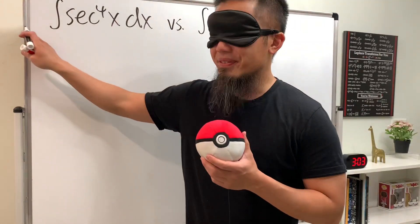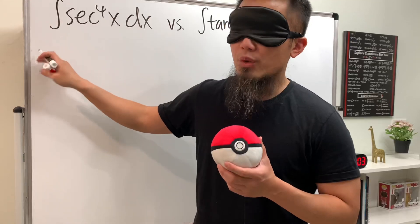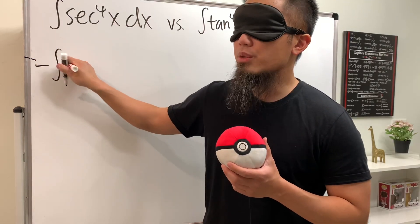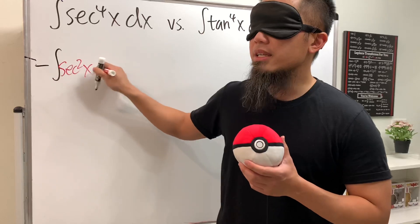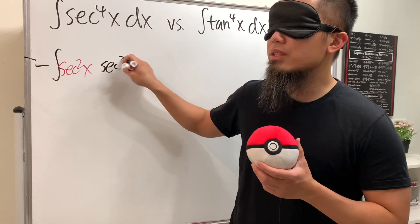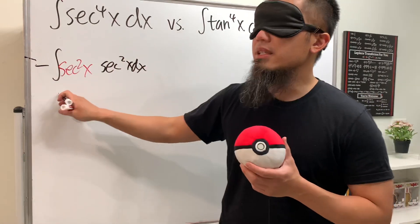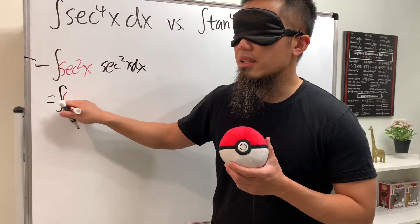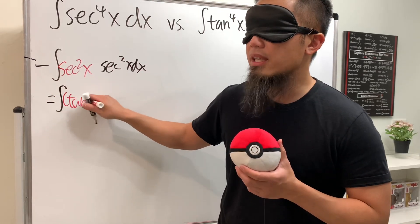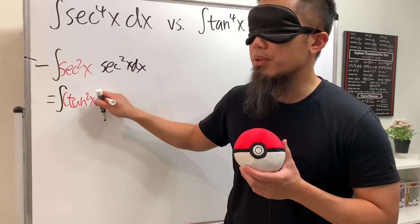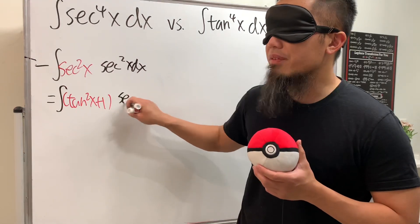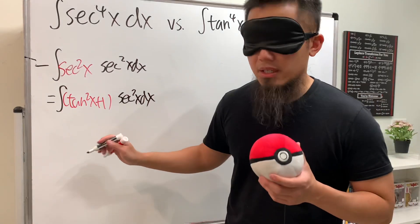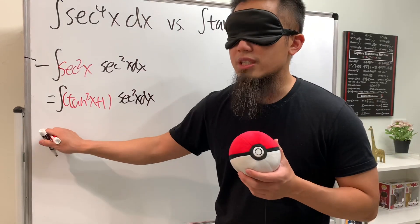For the first one, the integral of secant to the fourth power — we write this as the integral of secant squared x times secant squared x dx. This way we can use the identity: the first secant squared x is the same as tangent squared x plus one, and then we still have the secant squared x dx.